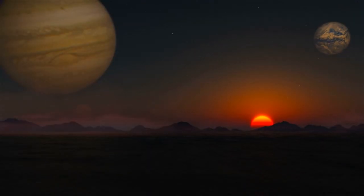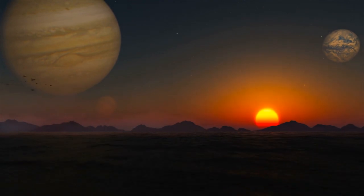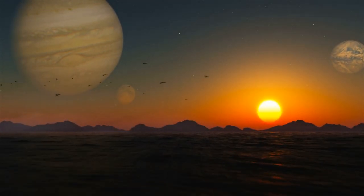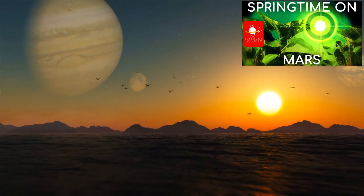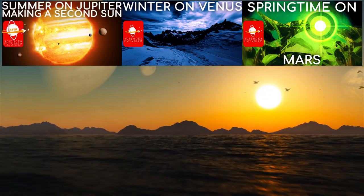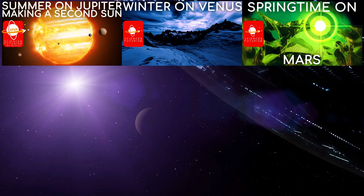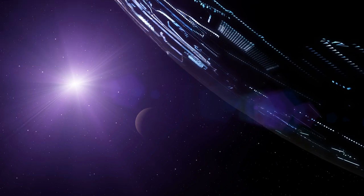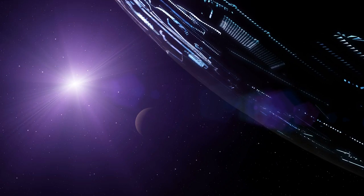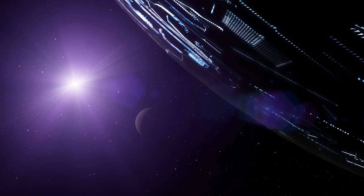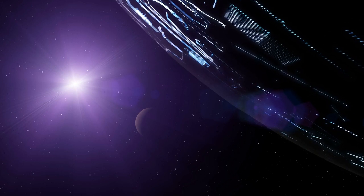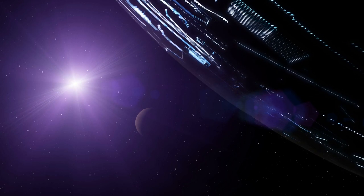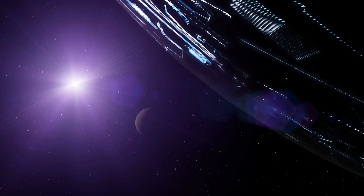Mars will probably be terraformed, as will Venus, and possibly some of the moons of Jupiter. We looked at the specific approaches in our Springtime on Mars, Winter on Venus, and Summer on Jupiter episodes, but terraforming beyond this solar system is likely to either be very heavy on bioforming, and very heavy on the engineering side to the point of being effectively megastructures as much as planets, or be limited to those planets a lot closer in mass and makeup to Earth than Mars or even Venus are.